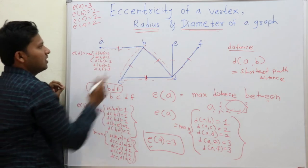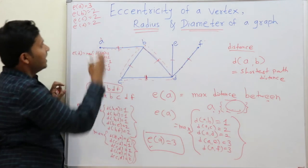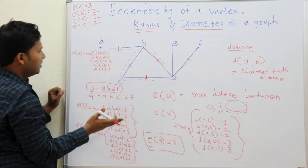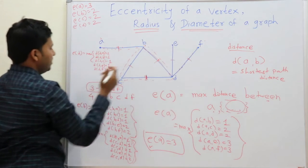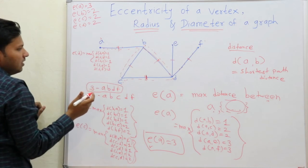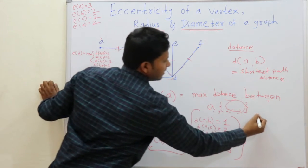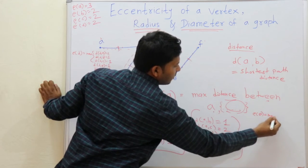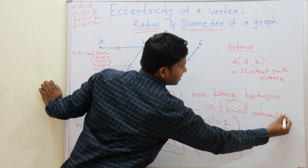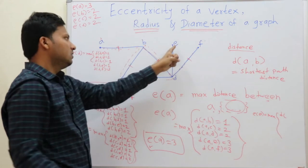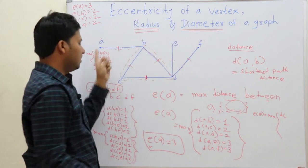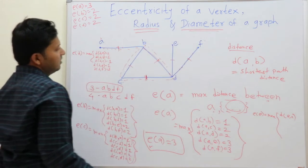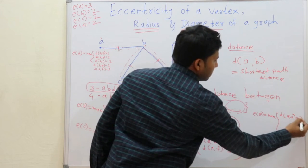To find radius and diameter you need to find the eccentricities of all vertices first. The remaining vertices are E and F. Let us find out the eccentricity of E. Distance E to A: 1, 2, 3 — so that is 3.